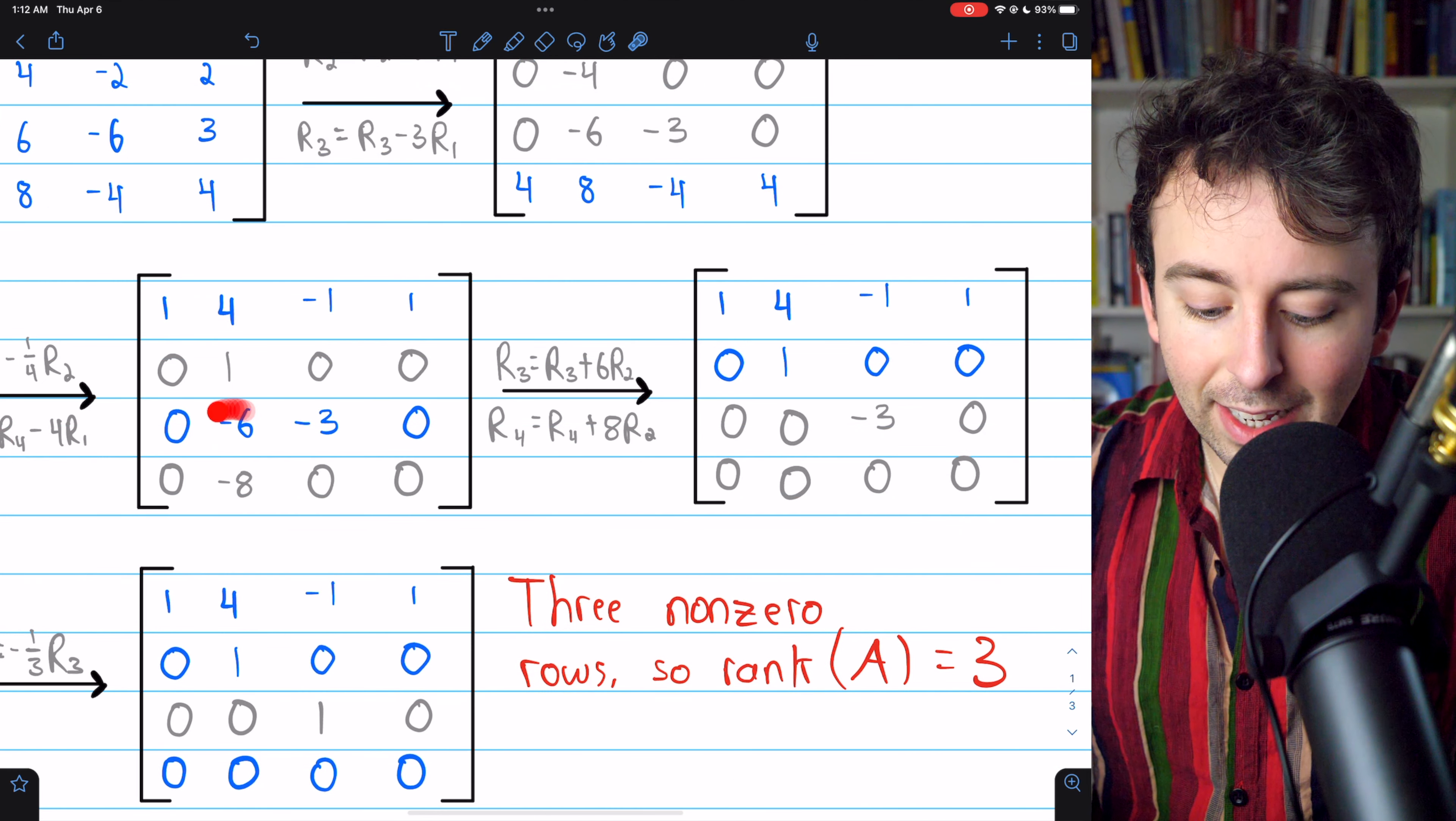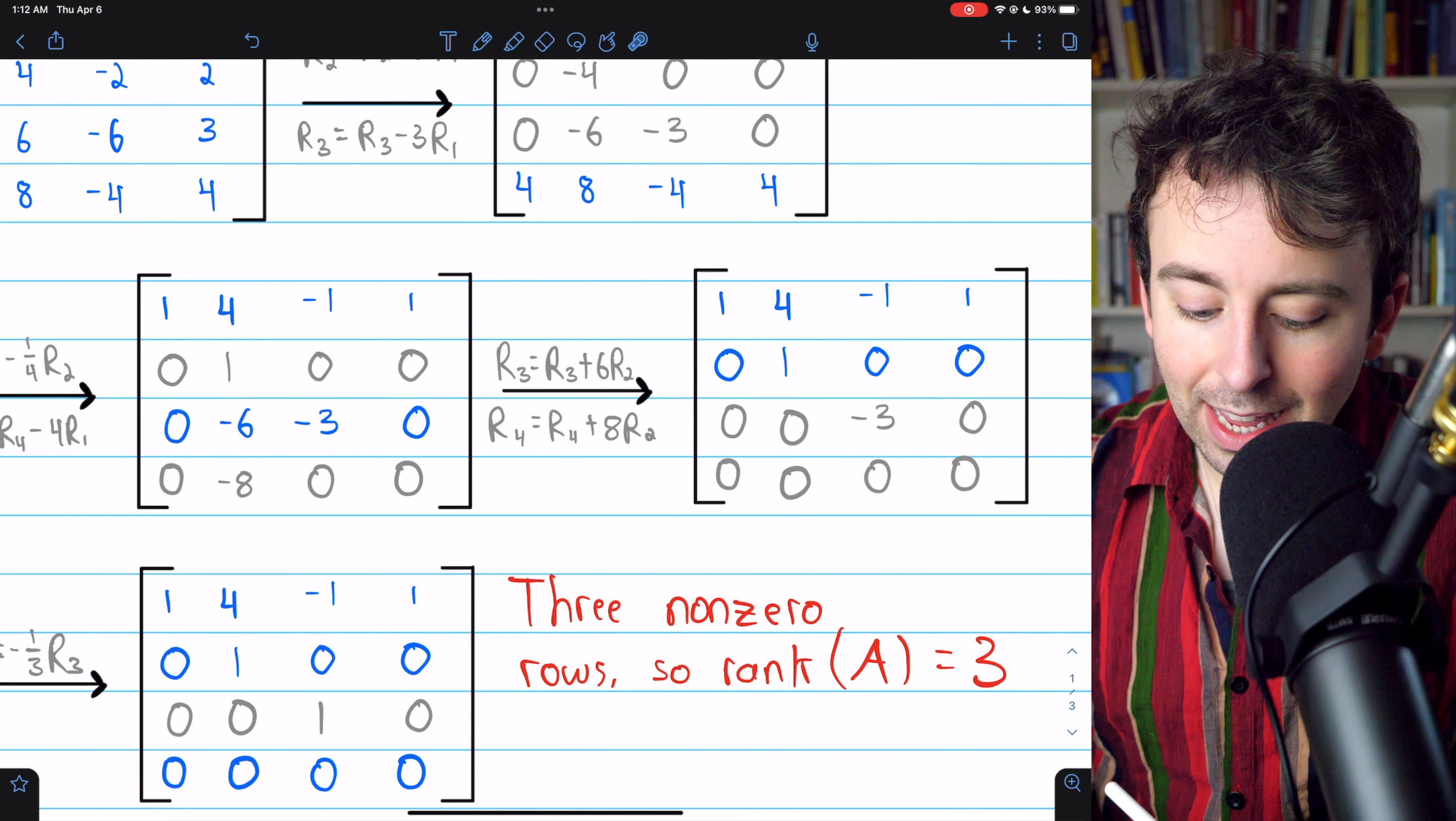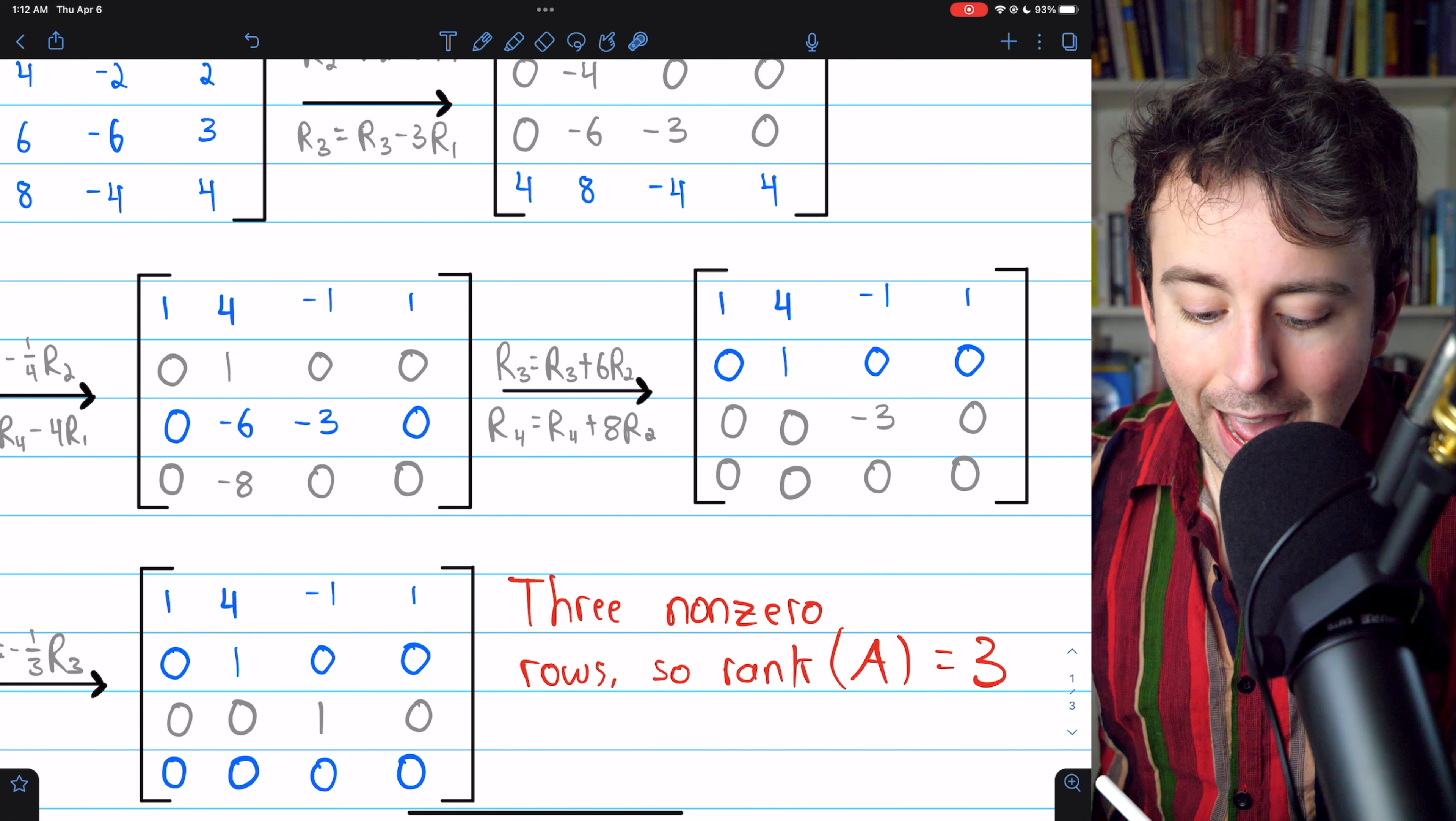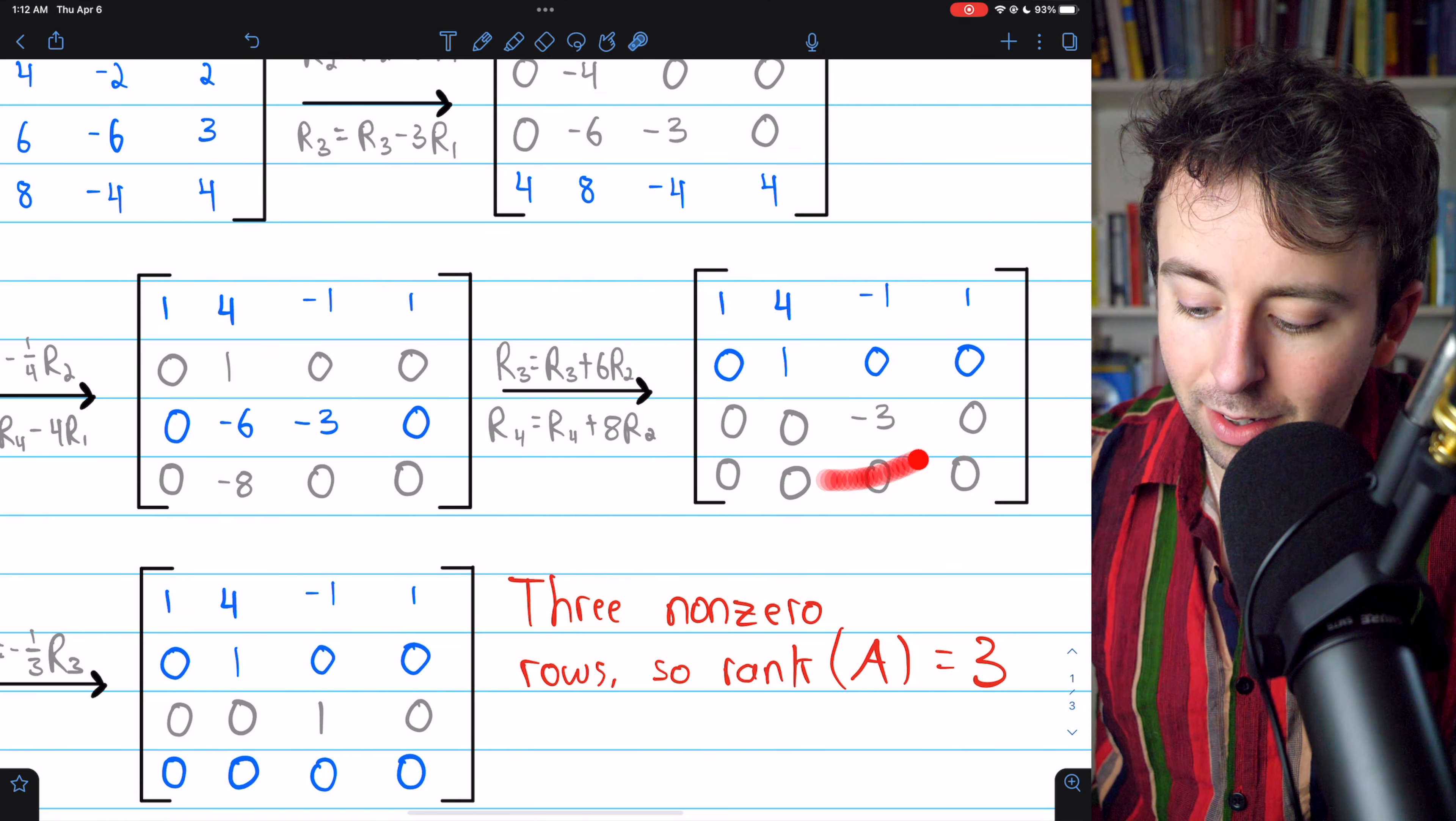Then, to get rid of this leading entry of negative six in row three, we add six copies of row two. And to get rid of this leading entry of negative eight, we add eight copies of row two to row four. And that gets us to this matrix here.